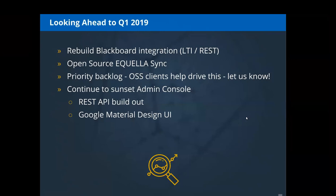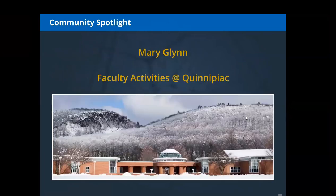There is a priority backlog that our open source support clients help to drive. If you're an open source support client and you have an issue with Open EQUELLA that's really difficult for your institution, let us know and we can up the priority and help get it into Open EQUELLA. With remaining time we are excited to continue to help sunset the admin console, build out the REST APIs, and help with the Google Material Design UI, working toward a responsive look and feel for Open EQUELLA.